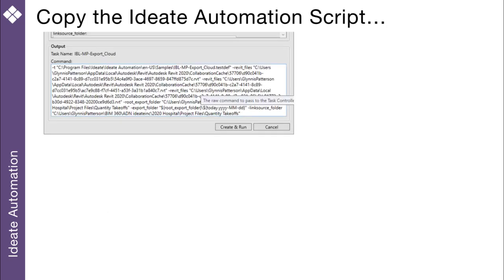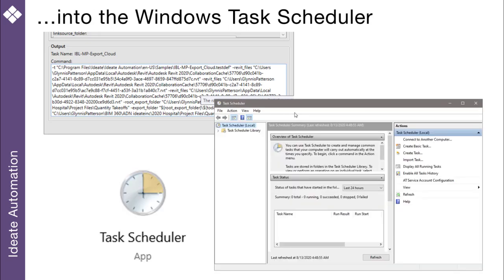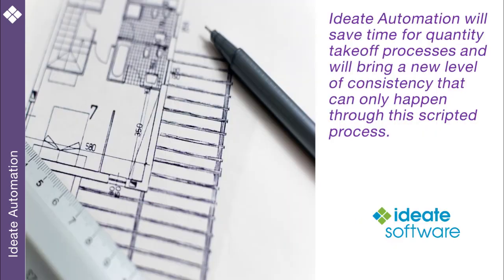If you find yourself wanting to repeat a task on a regular basis, you can always copy the script from automation and then paste it into the Windows Task Scheduler. ID8 Automation subscribers can contact support for detailed information on this process. ID8 Automation not only will save your business time through automating quantity takeoffs, but you will also find that you'll have a new level of consistency that can only happen through this scripted process.